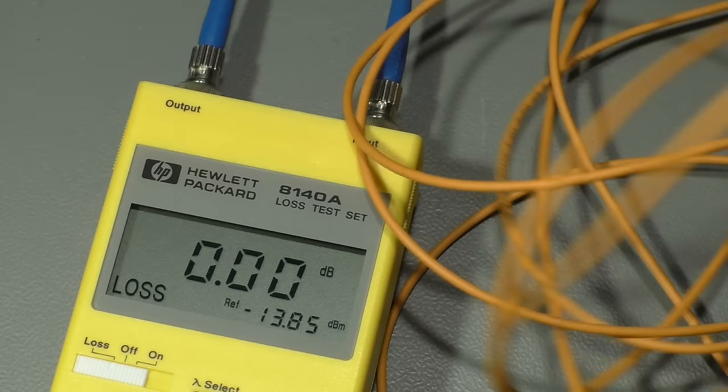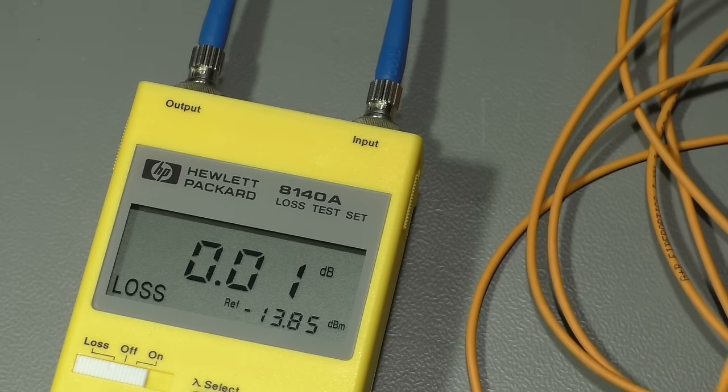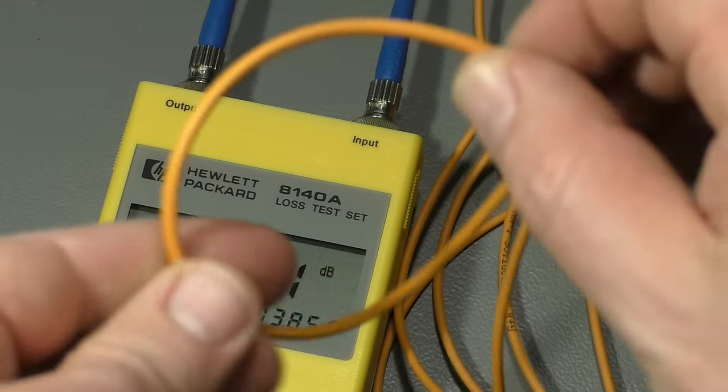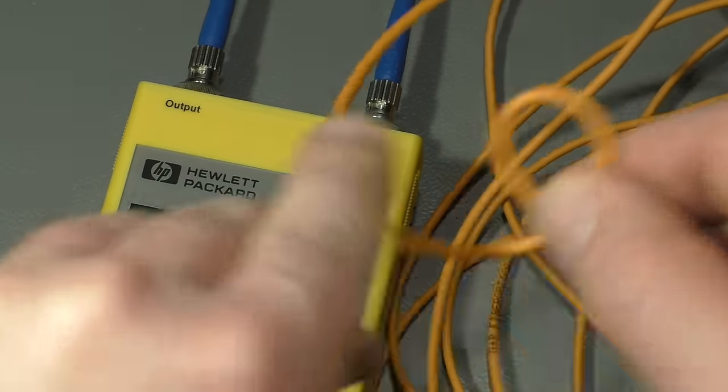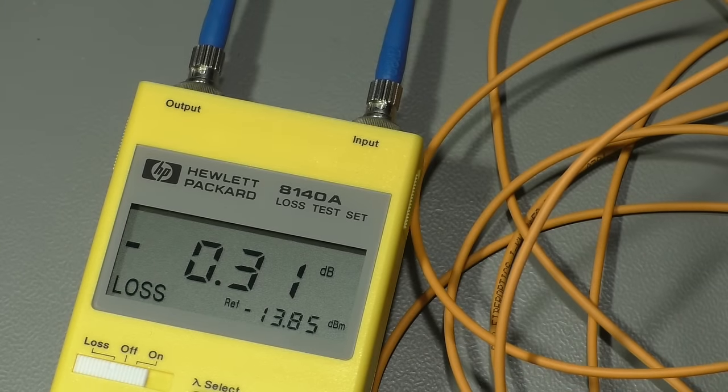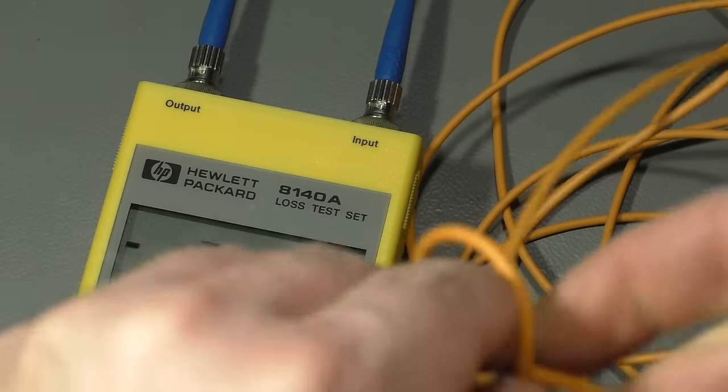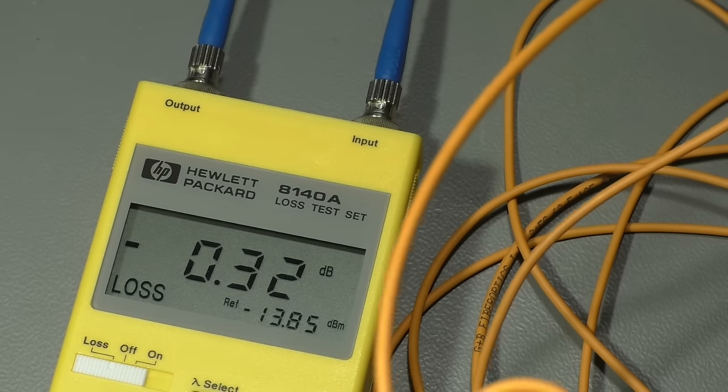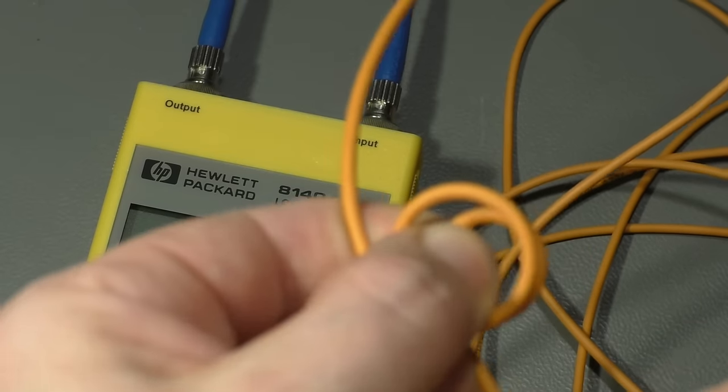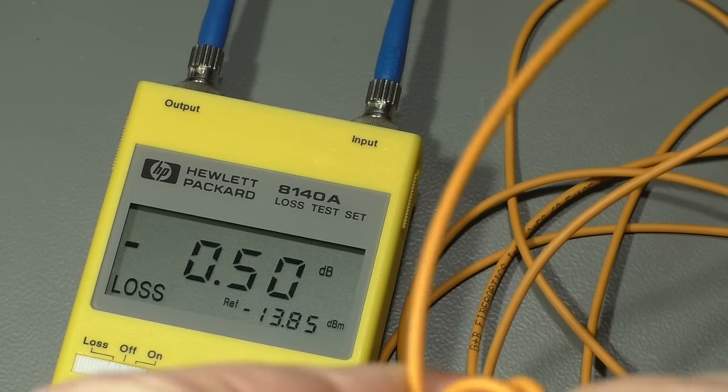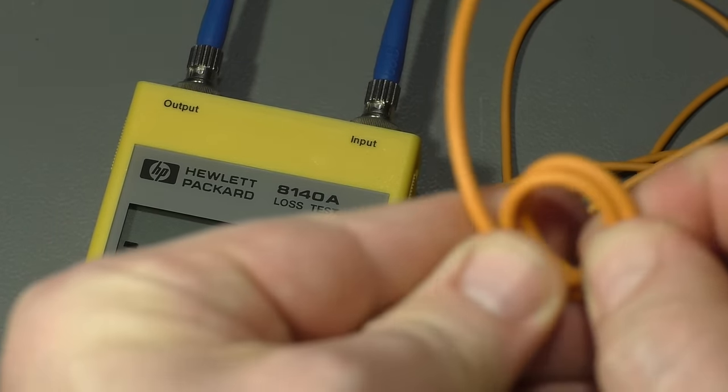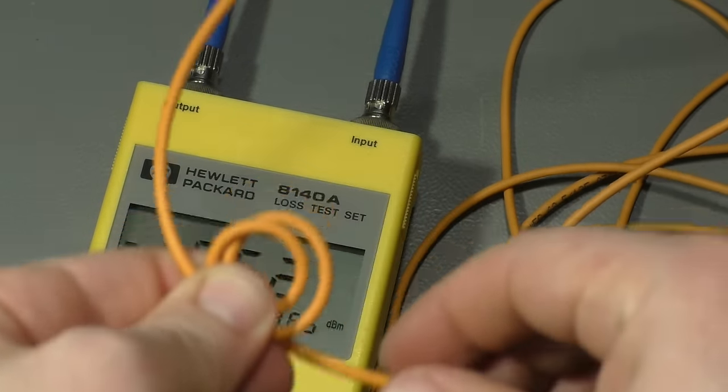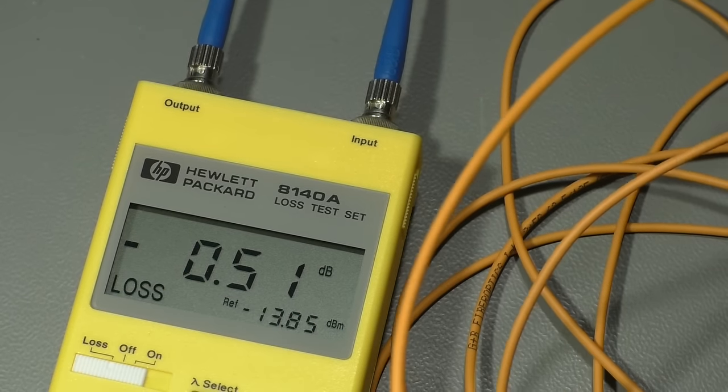And if I start bending the cable you will see the loss of optical energy will be bigger. We have one turn now, very narrow turn. It already has minus 0.3 decibels. Two turns, 0.4. So I narrow the turns, I pull it tight.